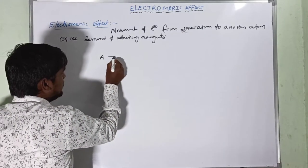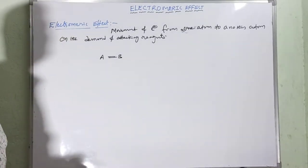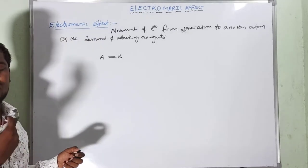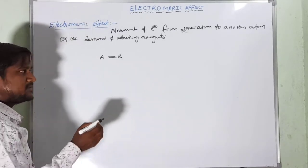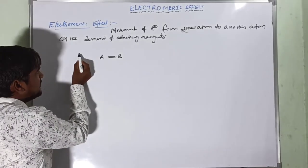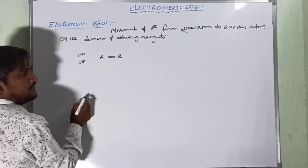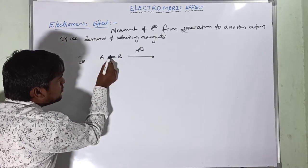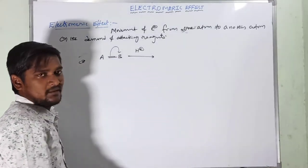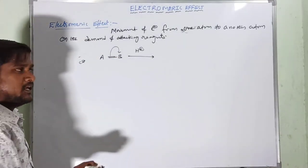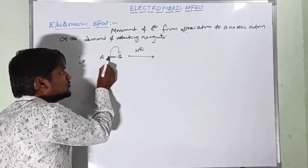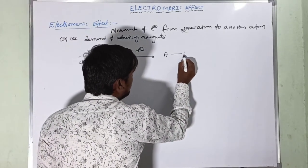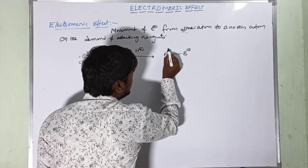Consider a double bond A=B. By itself it cannot polarize into cations and corresponding anions. But in the presence of additional reagents like H⁺ or CN⁻, the bonded two electrons will shift to only one side — towards atom B. B then becomes B⁻ and A becomes A⁺.